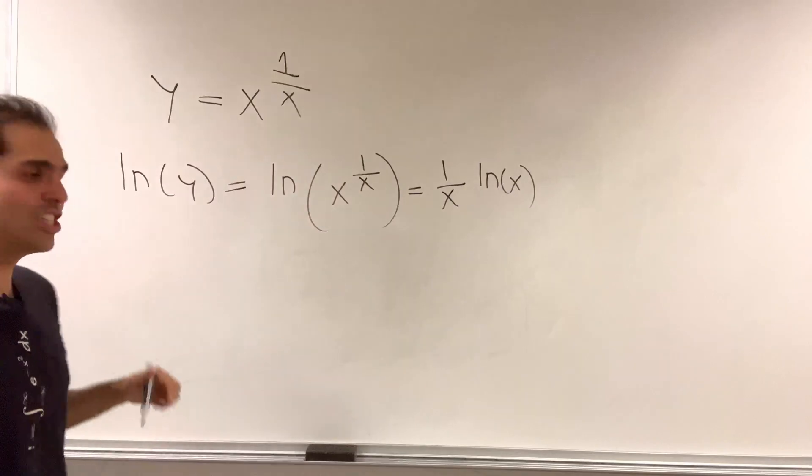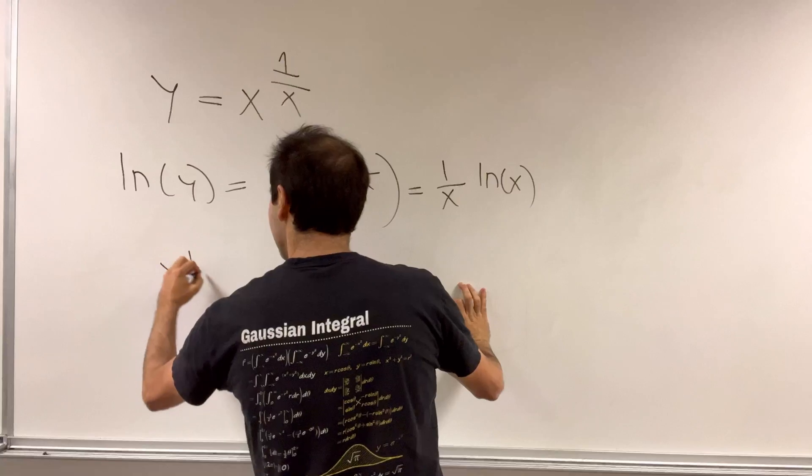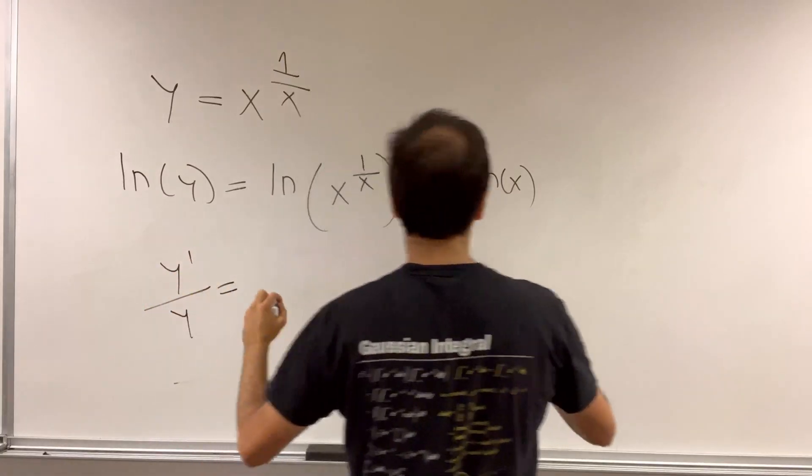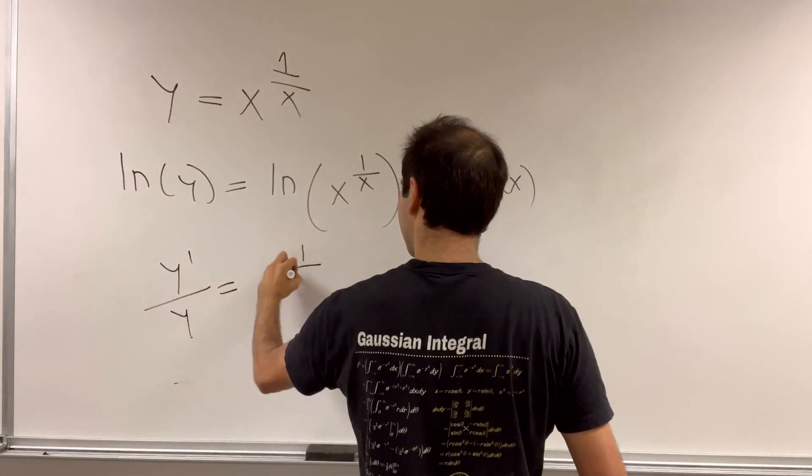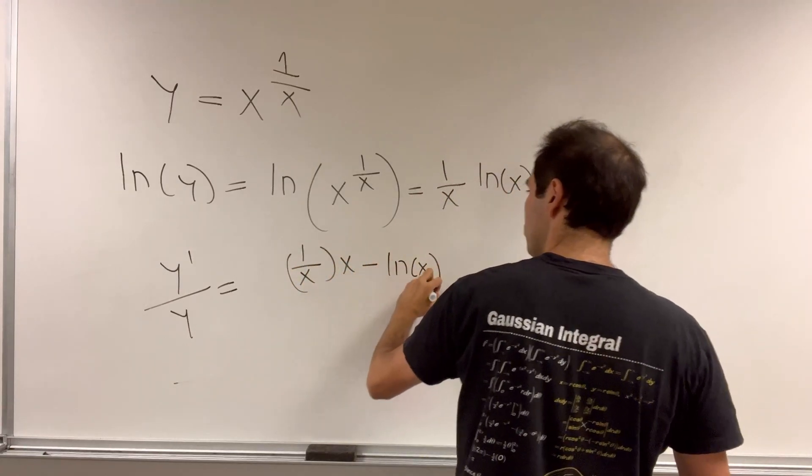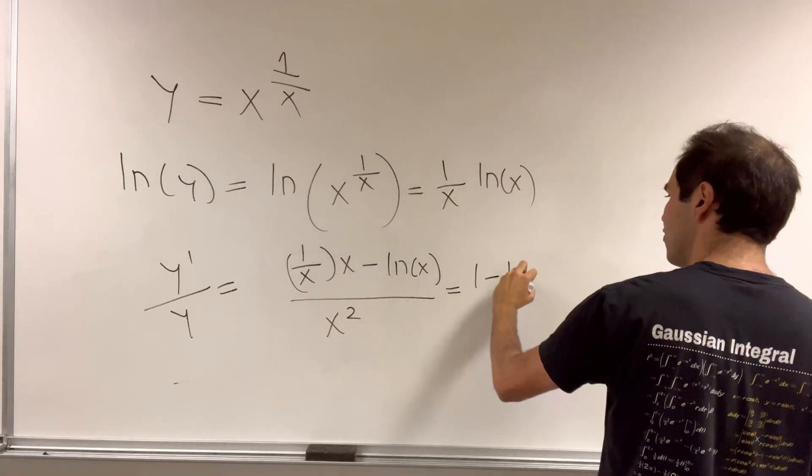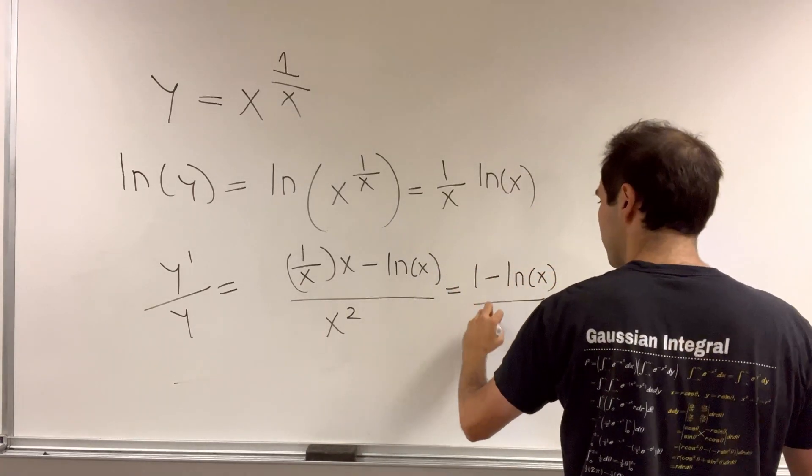Now, differentiate using the quotient rule, for which you get y prime over y equals 1 over x times x minus ln of x over x squared, which is 1 minus ln of x over x squared.